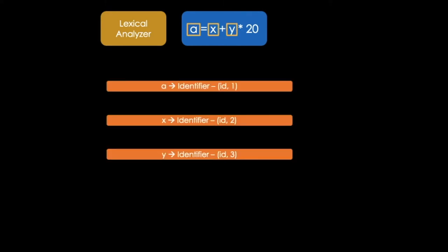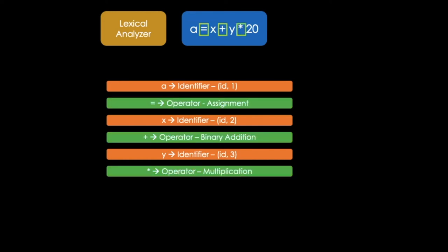Compiling starts with a lexical analysis. It scans the code as a stream of characters and groups the sequence of characters into lexemes. It would detect all terms a, x and y as identifiers, the equal, plus and multiplication sign as operators, and 20 as an integer. Then it outputs a sequence of tokens with reference to the programming language.